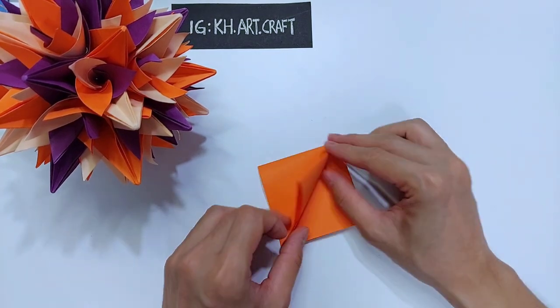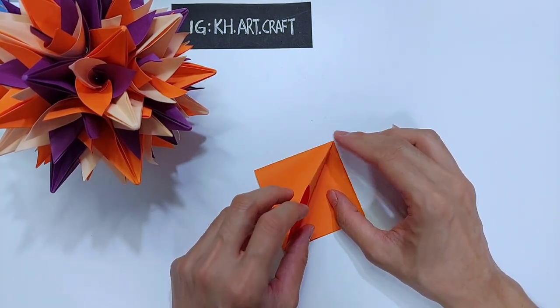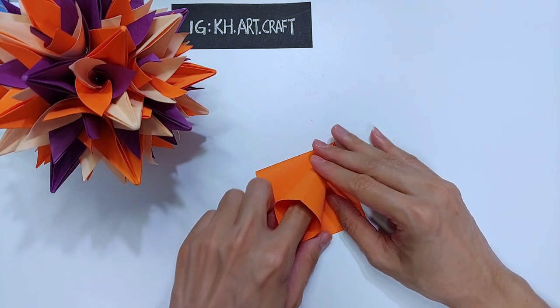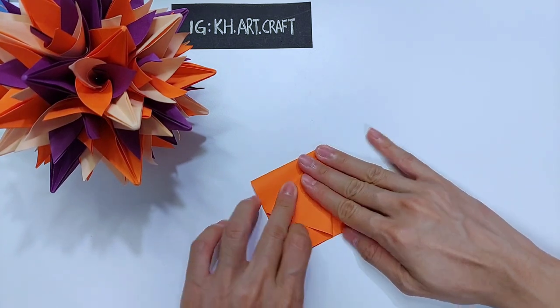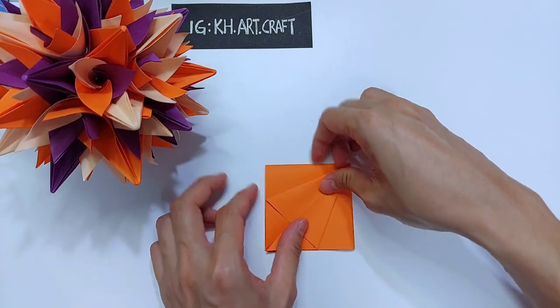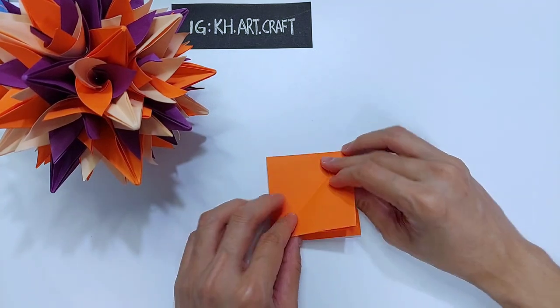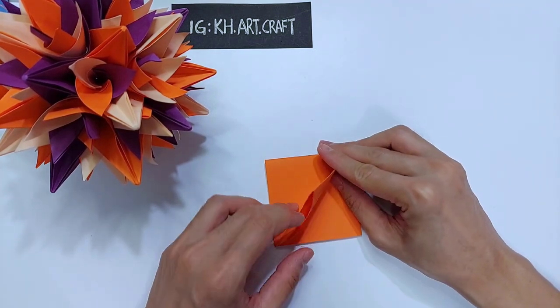Do a squash fold on all these flaps. A squash is just like this, and repeat it for all the sides.